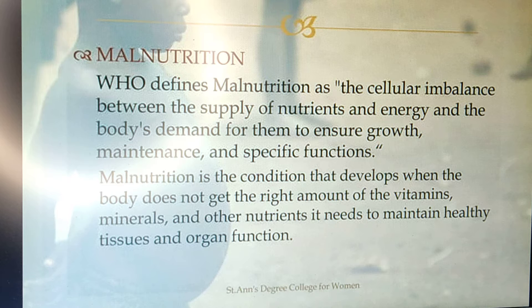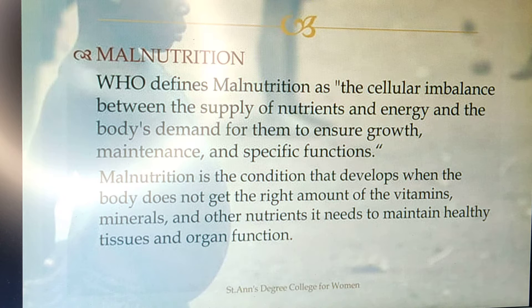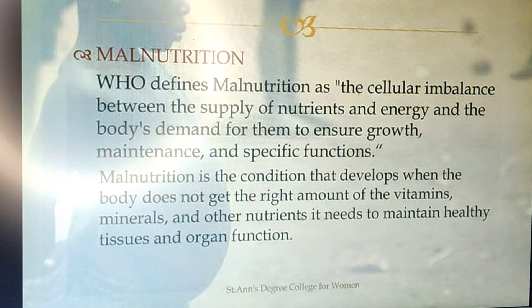For our organs to function properly, we need to provide a good nutritional diet to our tissues and cells. Only then does organ functioning run properly, and we must maintain the proper diet to support the growth and development of the body. In malnutrition, the child is unable to supply the essential nutrients to the body for growth, development, and proper organ functioning.